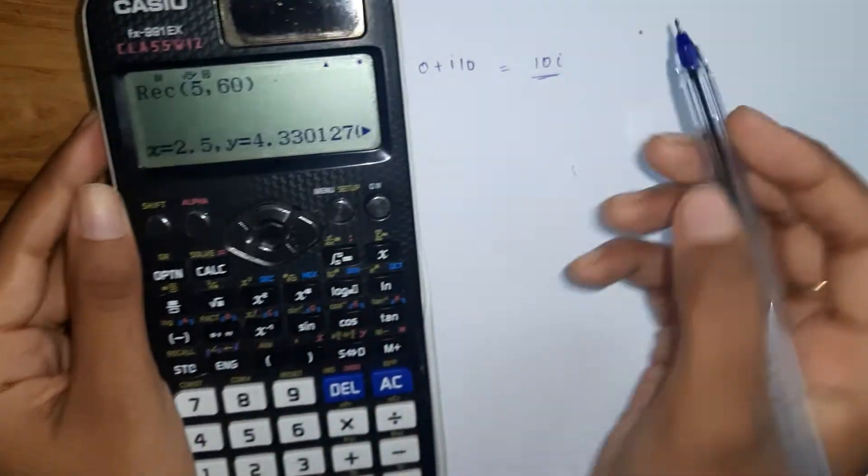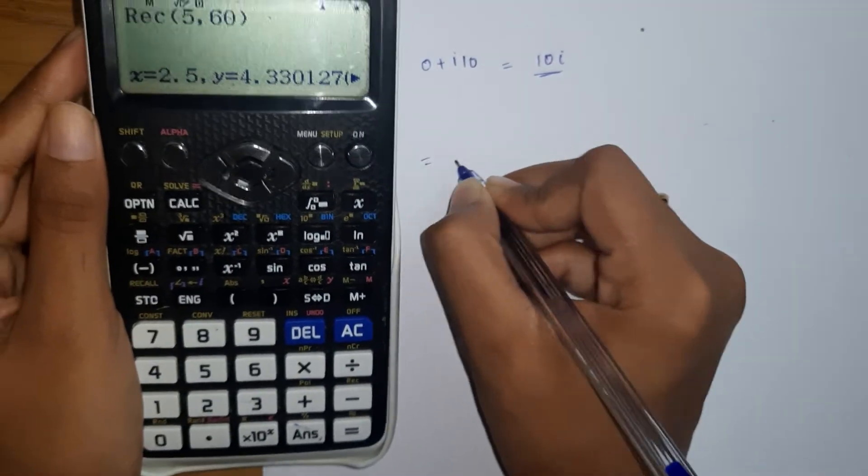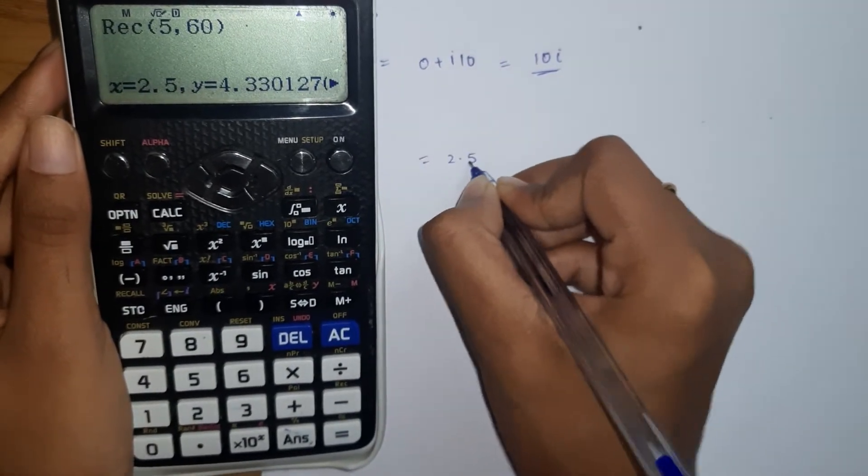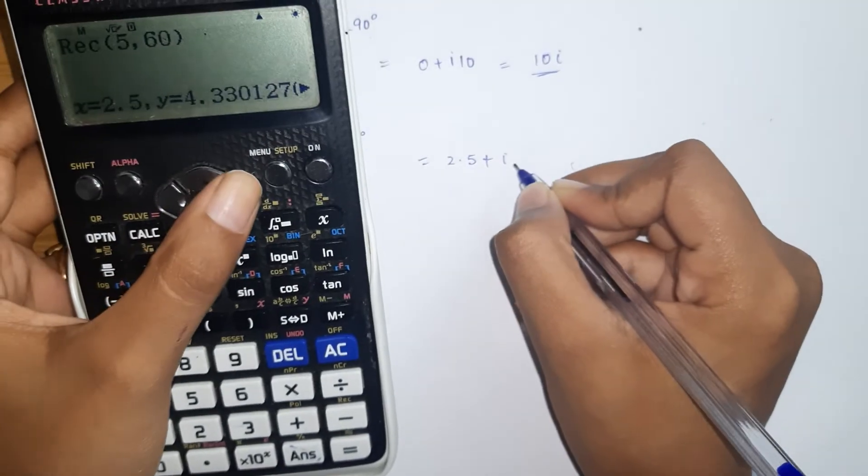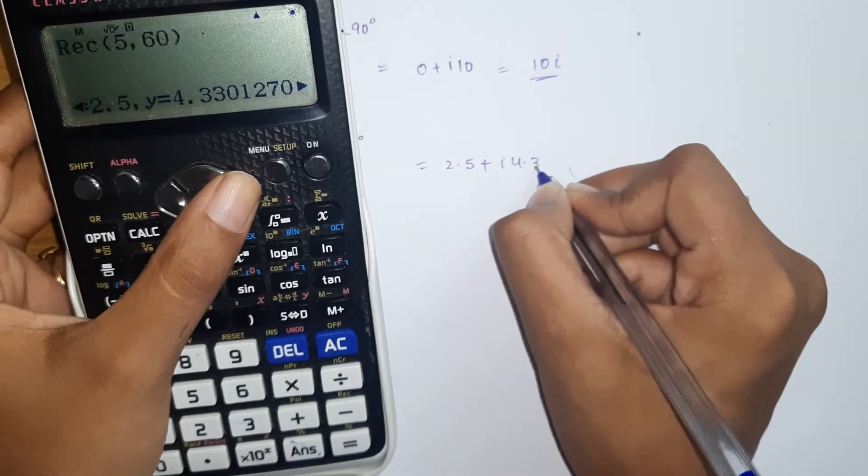Here it is 2.5, 2.5 plus i times 4.33. So this is our respective rectangular form.